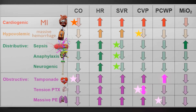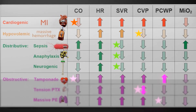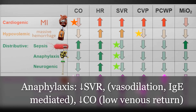In anaphylactic shock, we see a decrease in systemic vascular resistance due to vasodilation. This is an IgE-mediated type 1 hypersensitivity reaction with histamine release leading to the vasodilation. Interestingly, as opposed to sepsis, cardiac output will actually be decreased in anaphylaxis, because the vasodilation is so great that there's reduced venous return — not enough preload — and therefore reduced cardiac output.